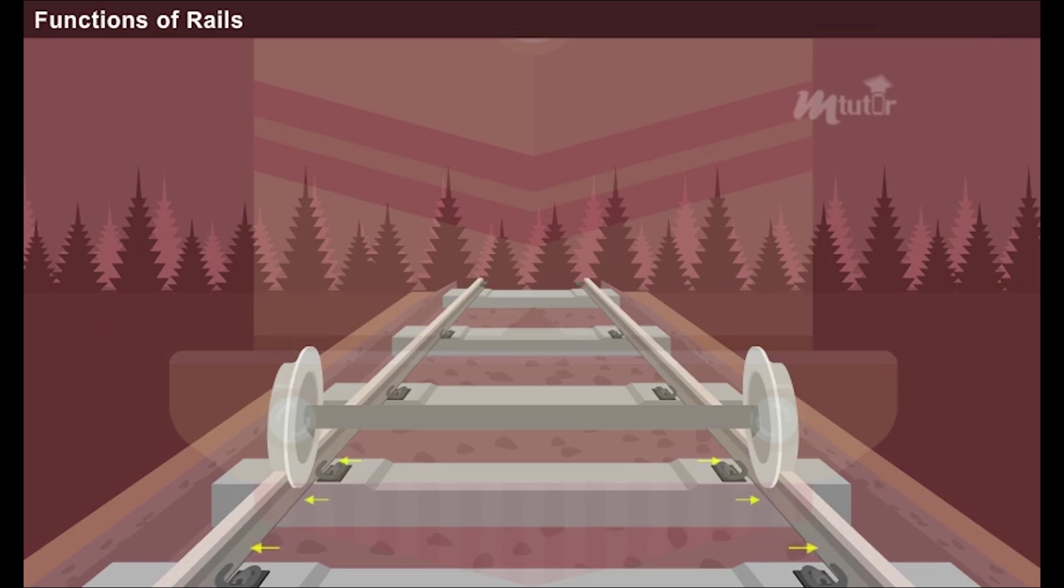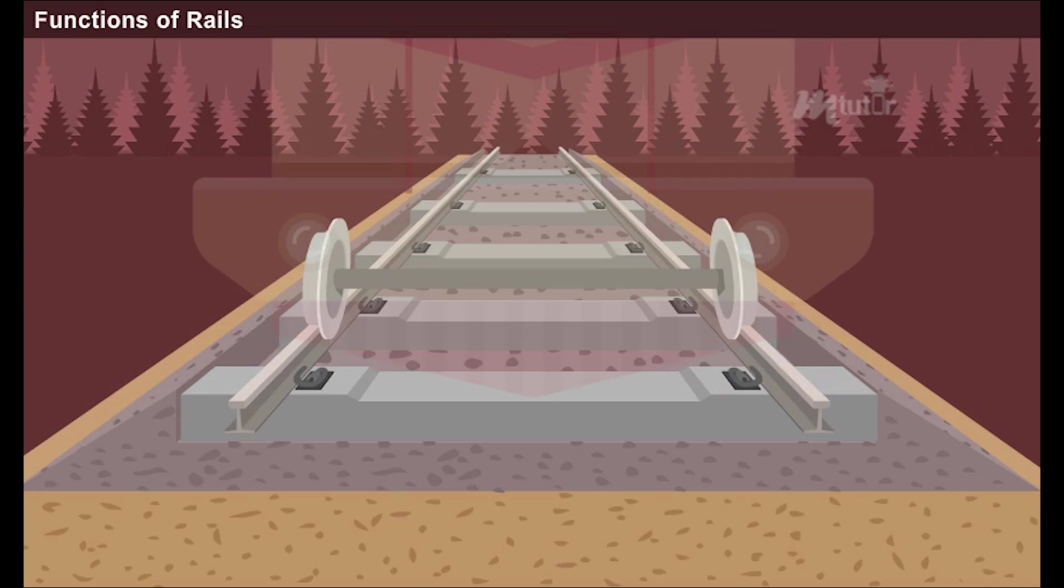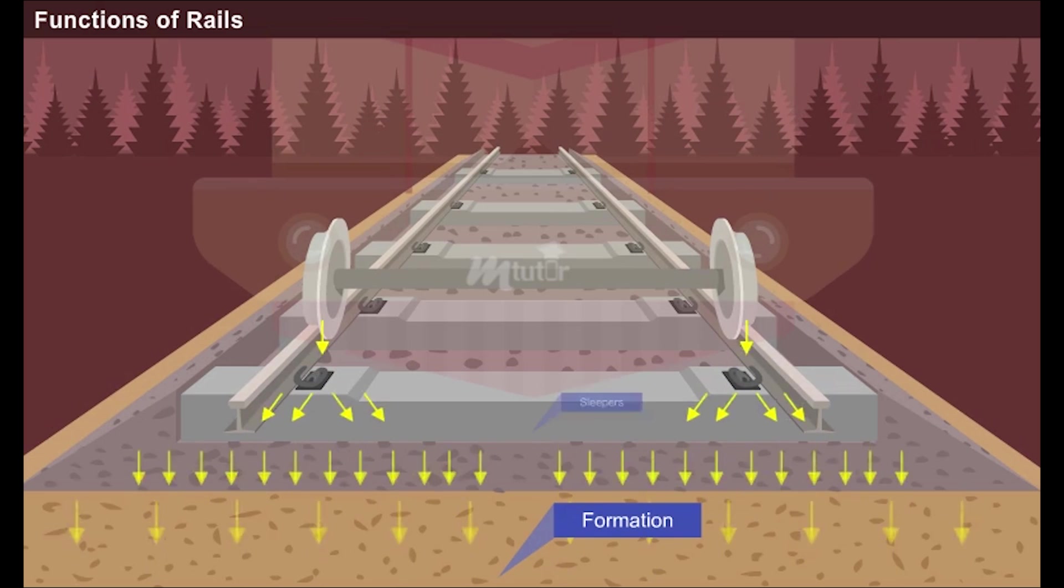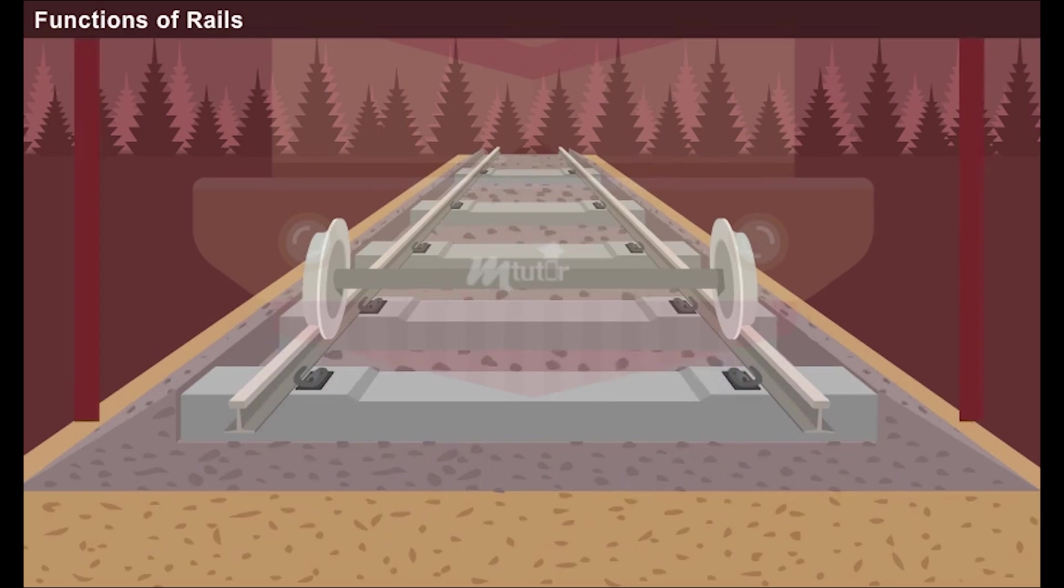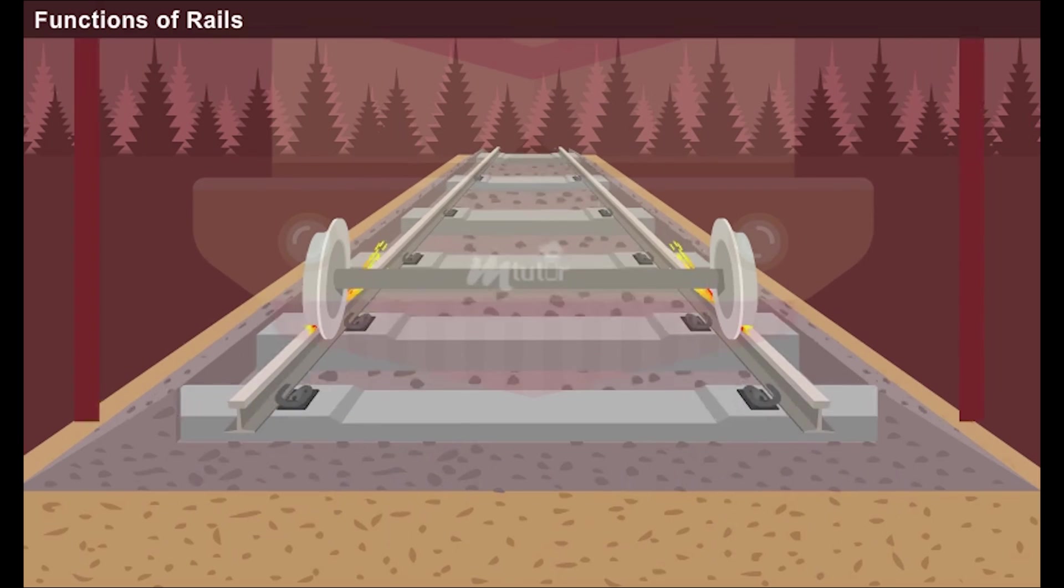They also provide a smooth pathway with very little friction. Rails receive the loads from the train wheels and transmit them safely to a larger area of formation through the sleepers and ballasts. In addition, they bear the stress transmitted through the axles and wheels and also bear the braking and thermal forces.